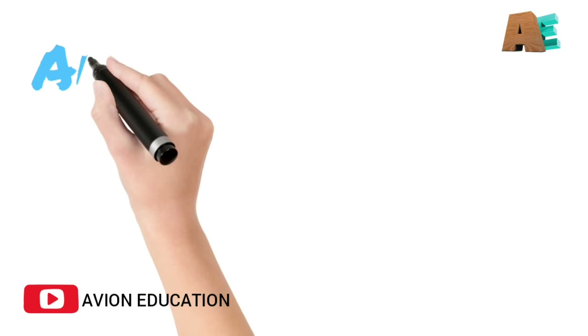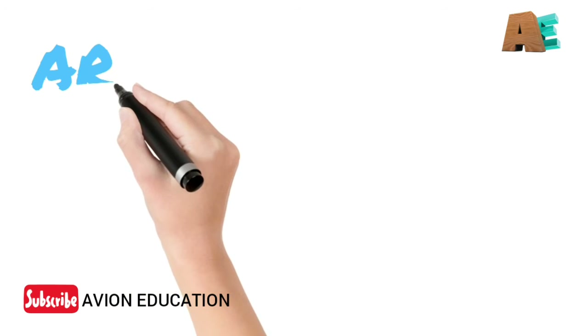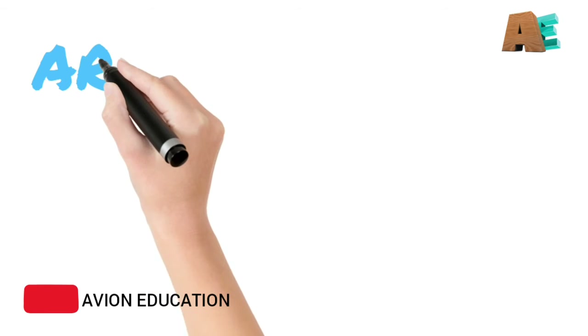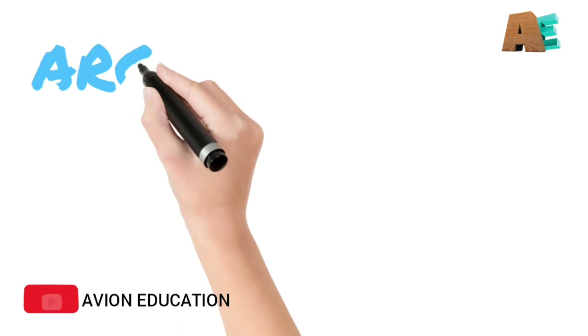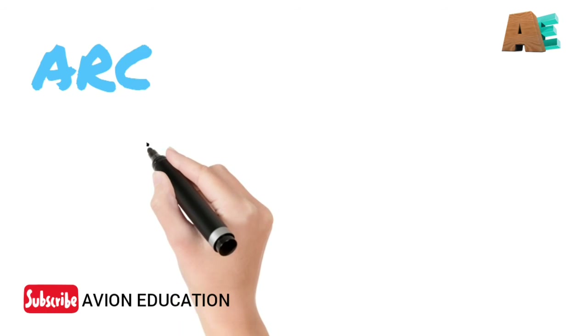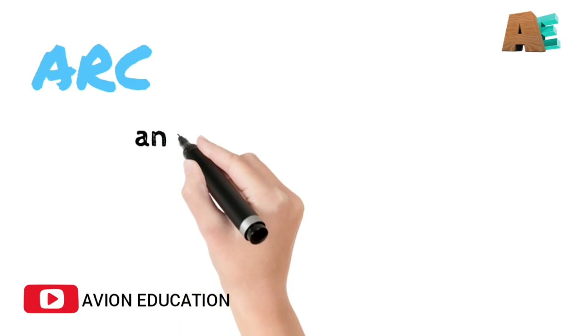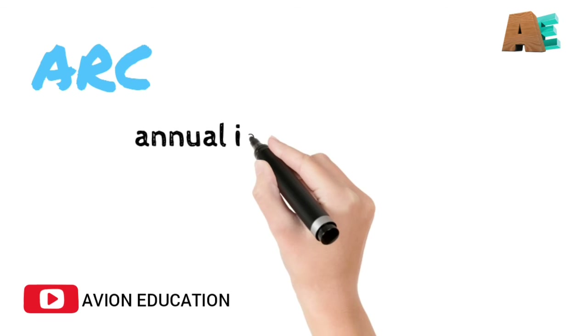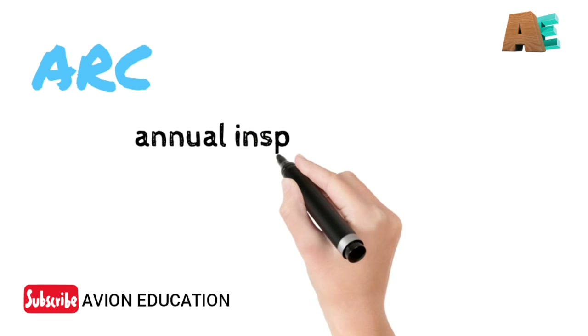Now let us see ARC — Airworthiness Review Certificate — and what is the difference between ARC and C of A.